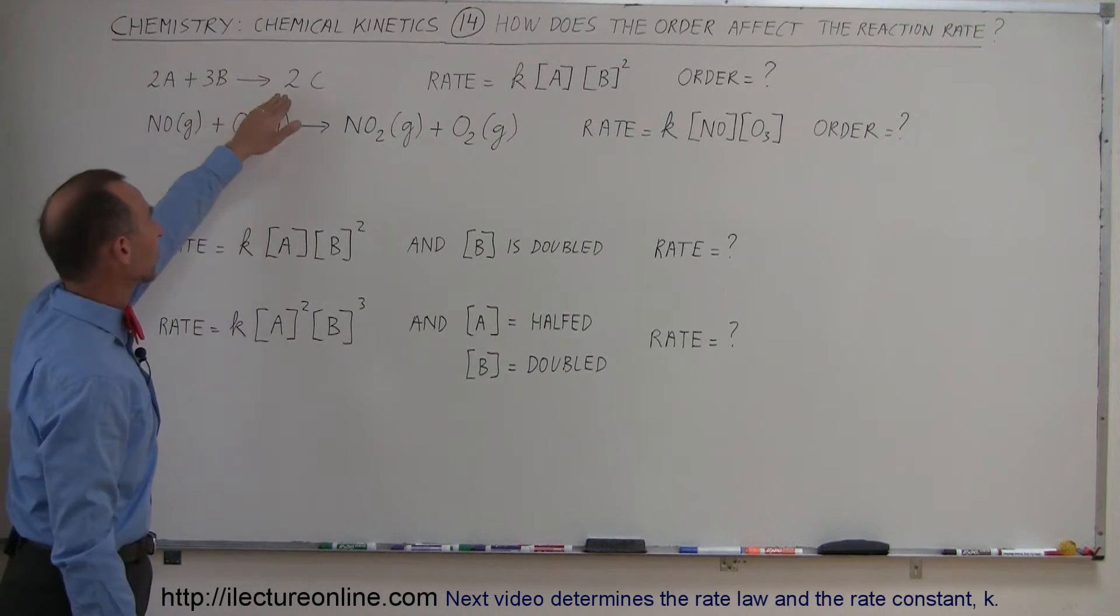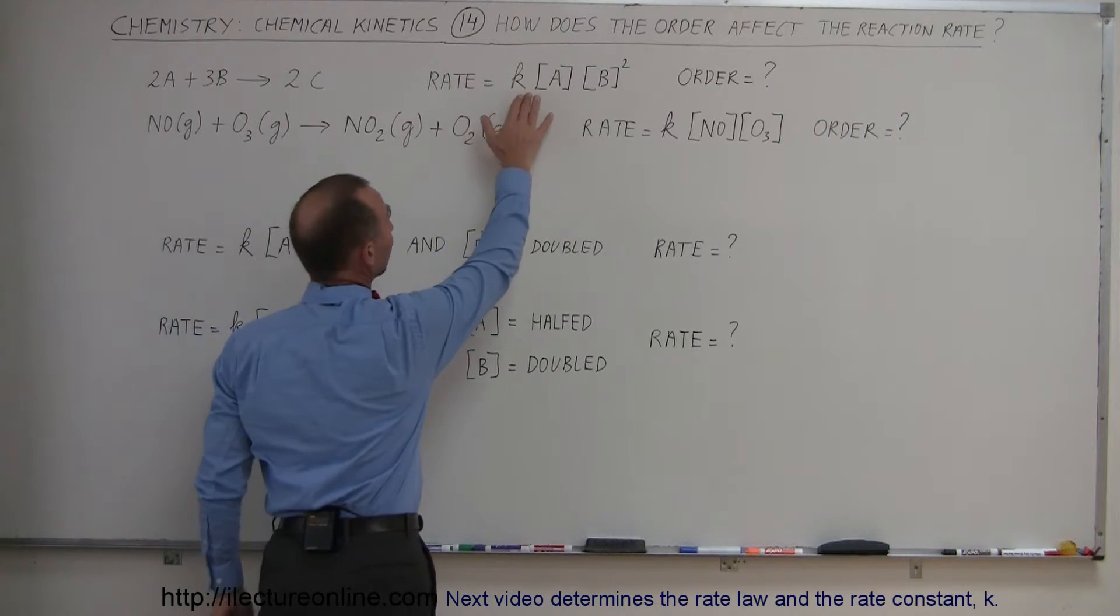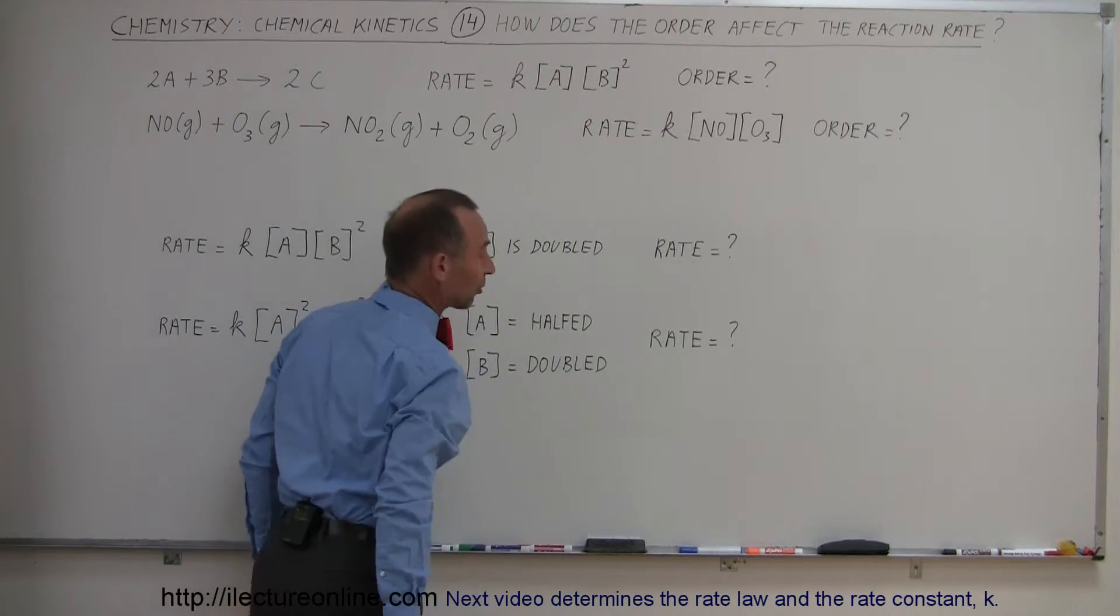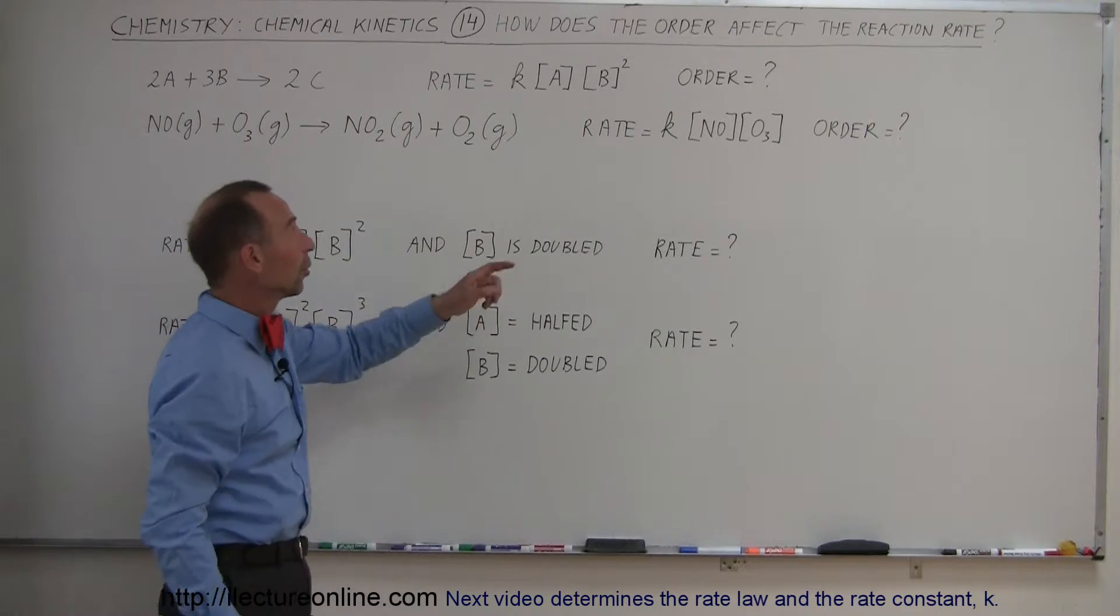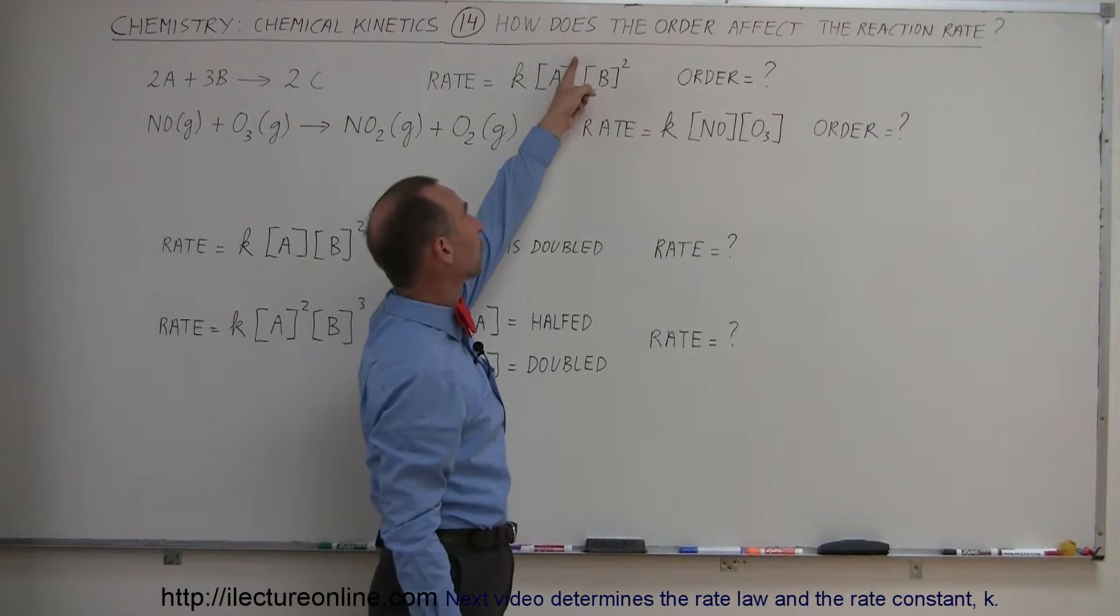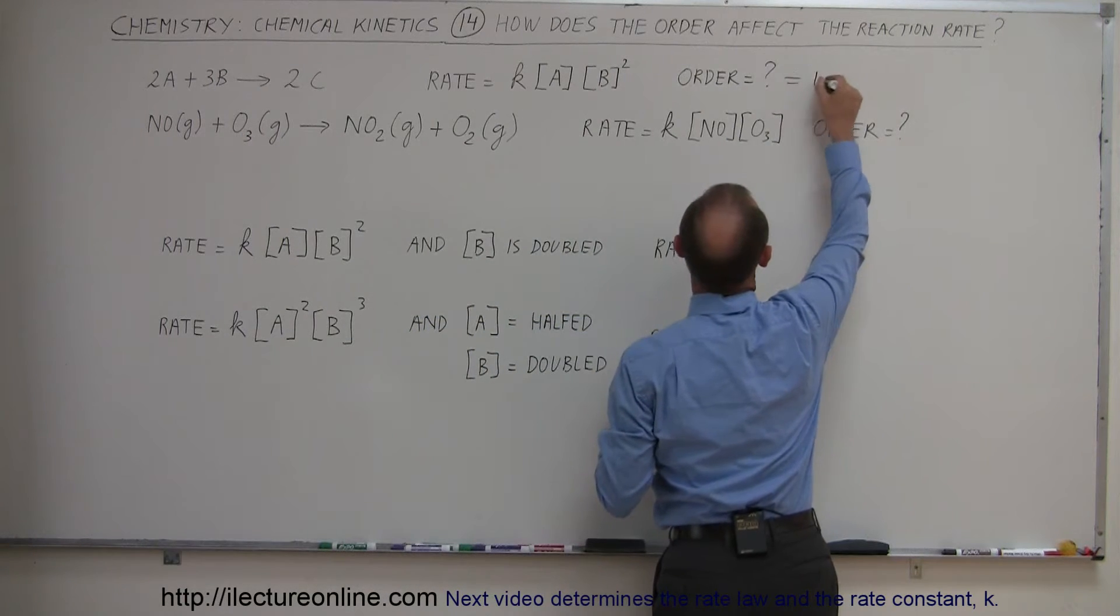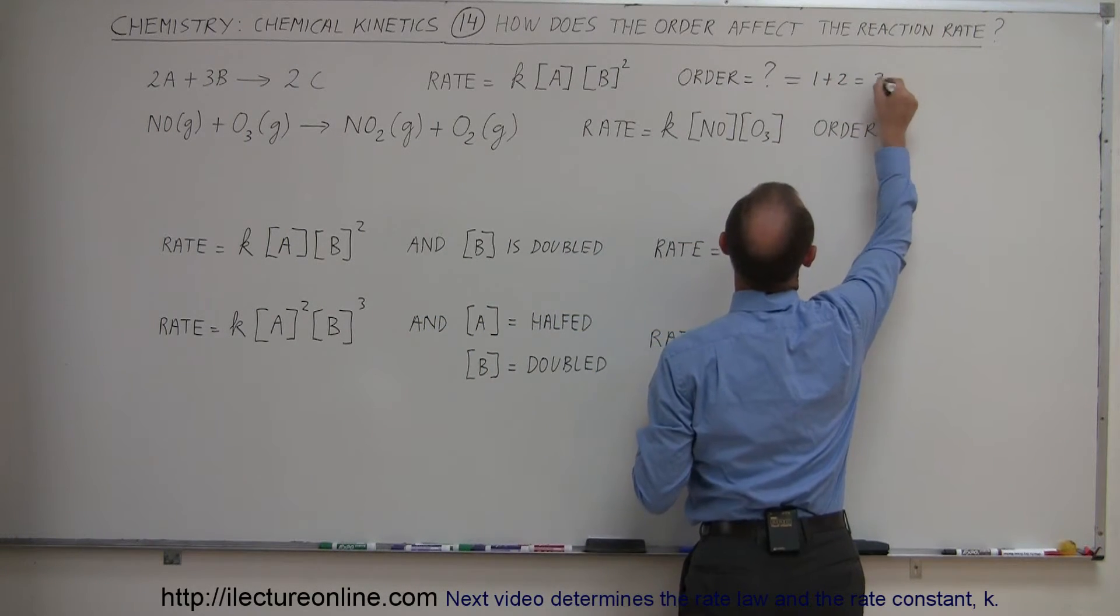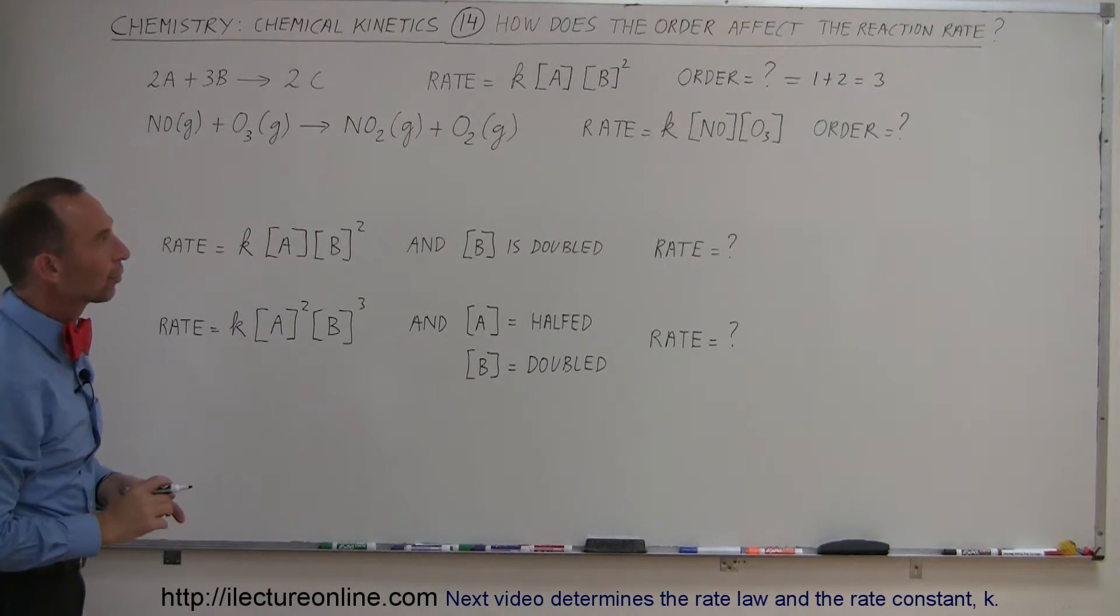So these are the reactants, that's the product, and let's say that the rate for this particular reaction is K times the concentration of A times the concentration of B squared. So what is the order in this case? Even though we don't write it, this is A to the first power, so we add up the exponents. So order is equal to 1 plus 2, which is 3. So then we call that a third order reaction, or an order 3 reaction.